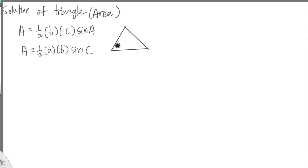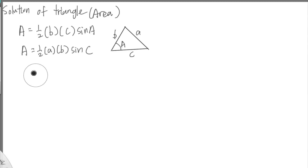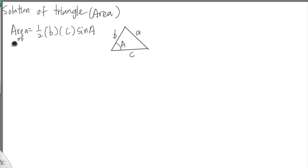Let's say we have a triangle like this. If this is the angle, I call this angle A, and the side opposite to angle A is the small letter a. The other two sides I simply write as B and C — B and C can be on either side, it doesn't matter. So the area of the triangle equals one half times B times C times sine A.